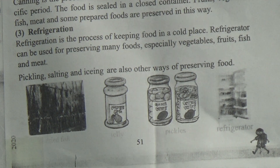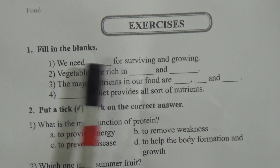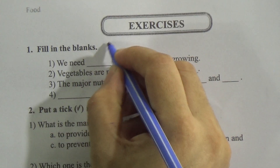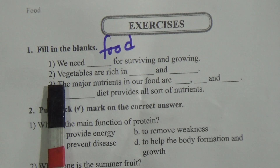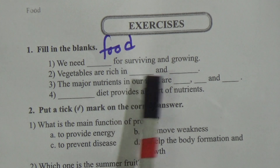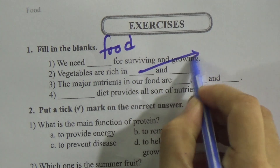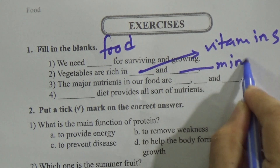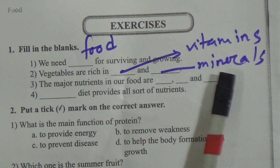Now the exercise — fill in the blanks. Number one: we need this for surviving and growing. The answer is 'food' — we need food for surviving and growing. Number two: vegetables are rich in — the answer is 'vitamins and minerals.' So write: vitamins and minerals.